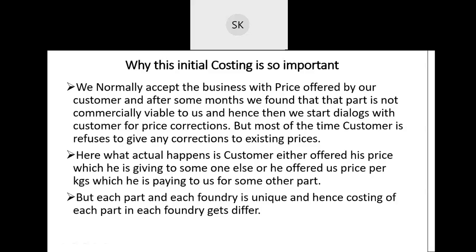What actually happens is the customer either offers his price which he is giving to someone else or some other foundry, or he offers us a price per kg which he is paying for some other parts. For example, a customer is taking a particular part at 62 rupees per kg and offering the same price to us, saying 'I am taking from XYZ foundry at 62 rupees per kg, please give me the same price.' Or the customer is taking some other parts from us at 62 rupees per kg and saying our agreed rate with you is 62 rupees per kg, so let us do this part at the same rate as well. We accept that offer and eventually find that the part is not commercially viable.